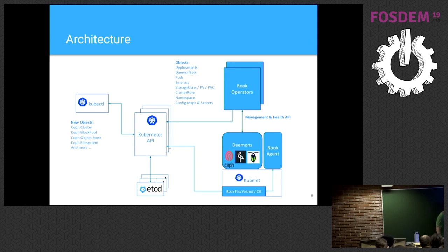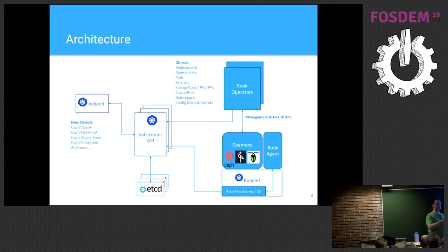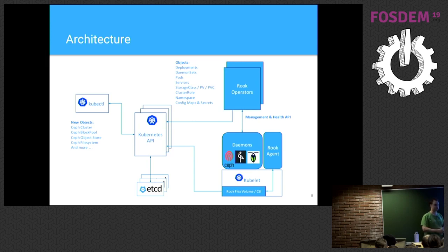When we have created those objects, we can access them again — just run, for those who know kubectl, like `kubectl get cephcluster`, and we get the object as it currently is in the API. In more recent releases of Kubernetes around 1.12 or 1.13, you even get more information about the object — a quicker overview of whether it's been created successfully, how many monitors you're running, and general information.